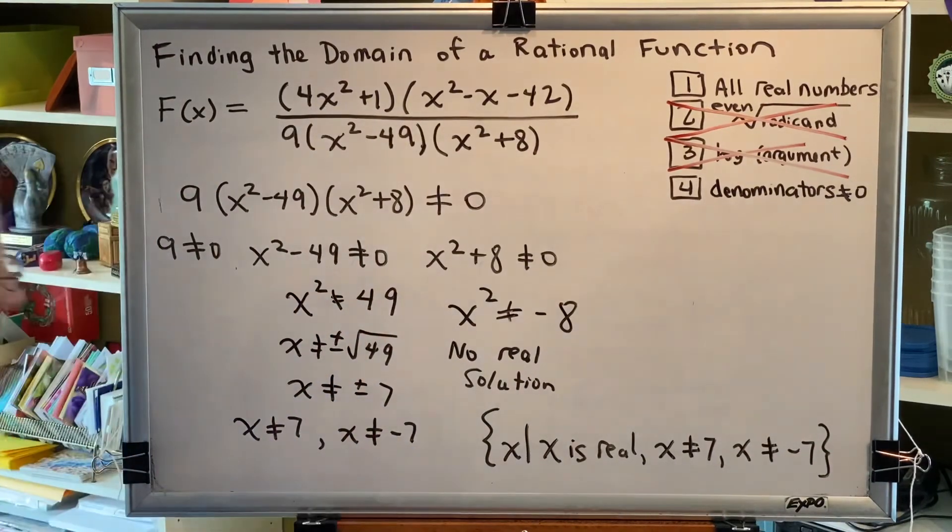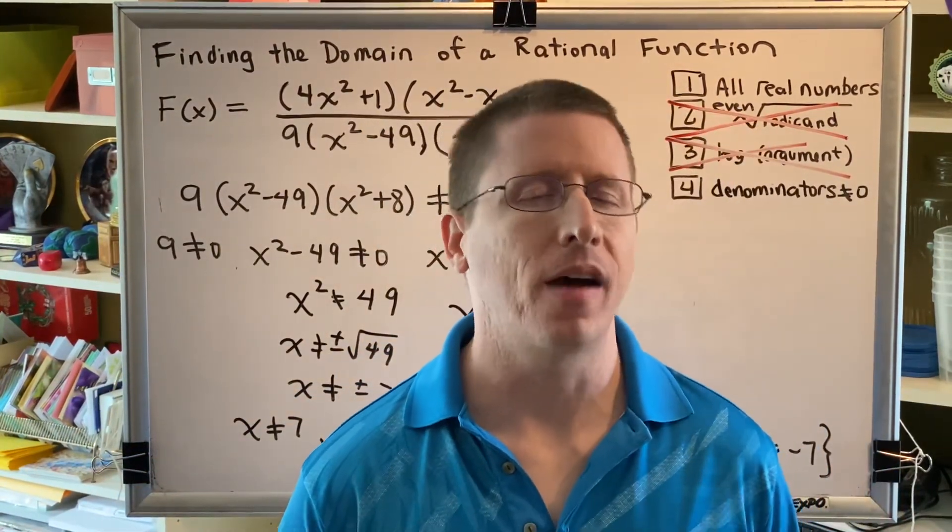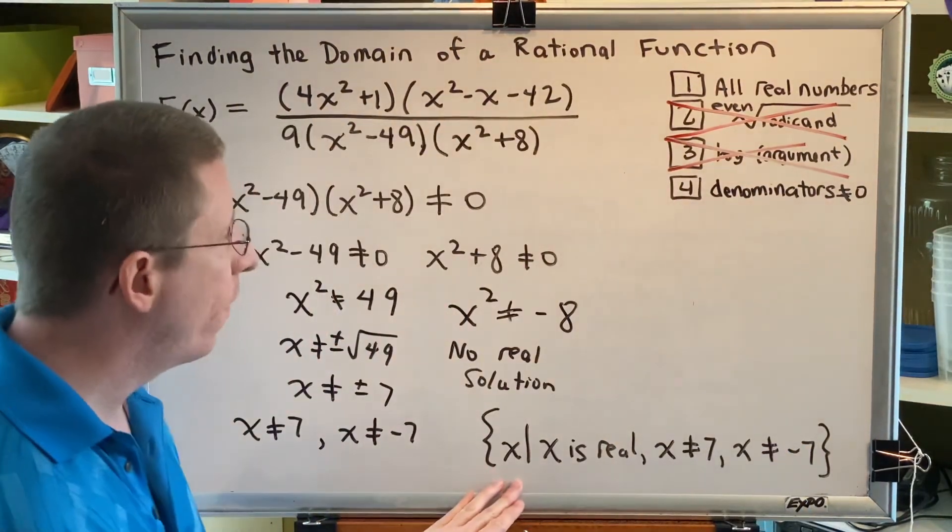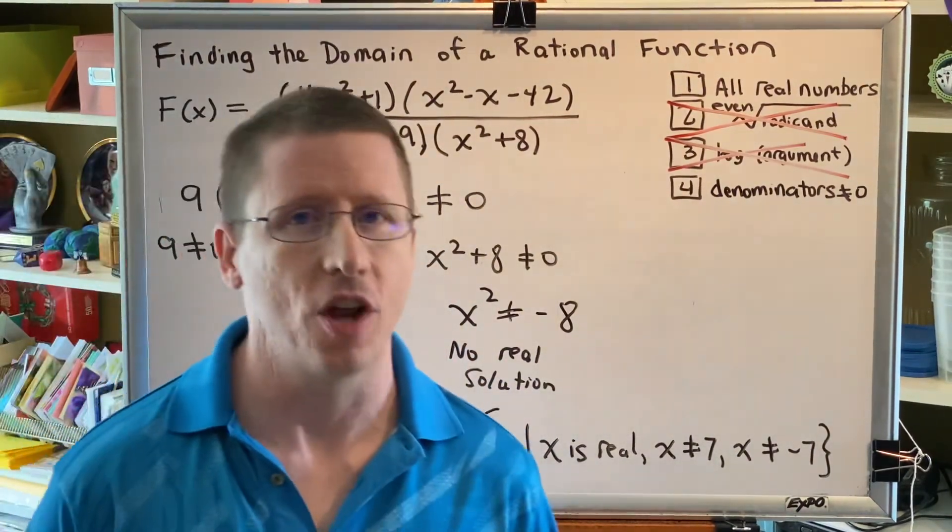Notice that we completely ignored the numerator for this problem. The reason why is because a numerator can be zero without breaking math, but a denominator cannot. Our job is to figure out what values of x we are allowed to use that don't break math, so we focus only on the denominator.